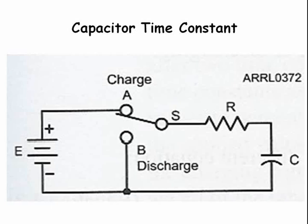When the switch is in position A, the capacitor will charge through resistor R. When we throw the switch to position B, the capacitor will discharge through resistor R. There is what is called a time constant for how long it takes the capacitor to charge or discharge, and for the electric field across the capacitor to build and decay.